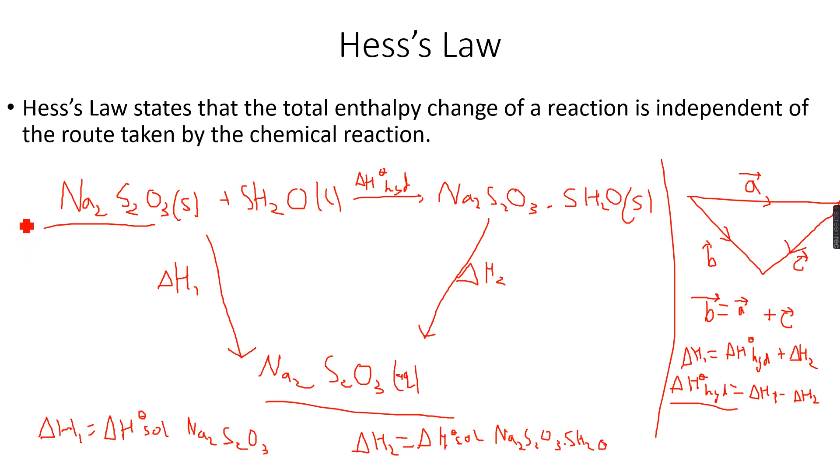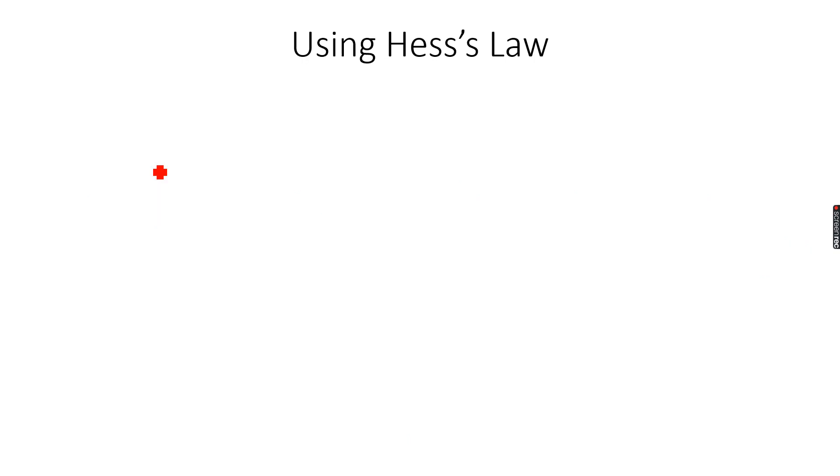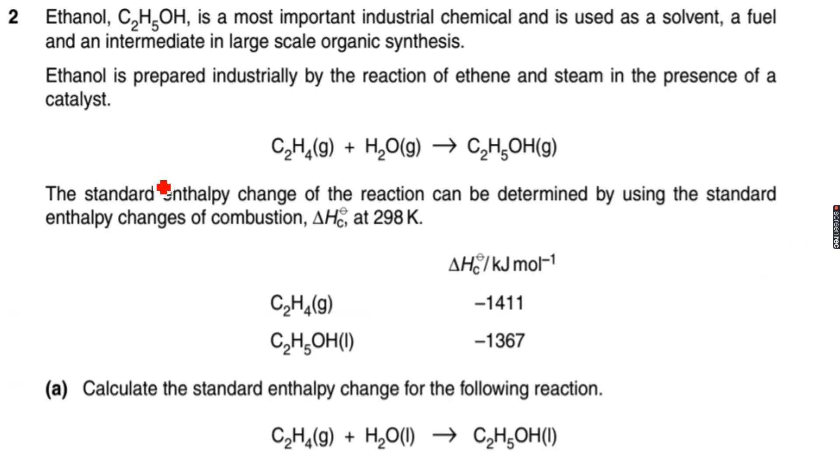So let's do some questions using Hess's Law. Ethanol, C₂H₅OH, is a most important industrial chemical and is used as a solvent, a fuel, and an intermediate in large scale organic synthesis. Ethanol is prepared industrially by the reaction of ethene and steam in the presence of a catalyst. The standard enthalpy change of the reaction can be determined by using the standard enthalpy changes of combustion at 298 Kelvin.